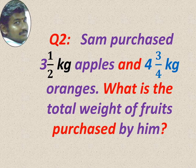Sam purchased 3 1 by 2 kg apples and 4 3 by 4 kg oranges. What is the total weight of the fruit purchased by him? Here, mixed fractions are given. So mixed fractions, first we have to make it into improper.